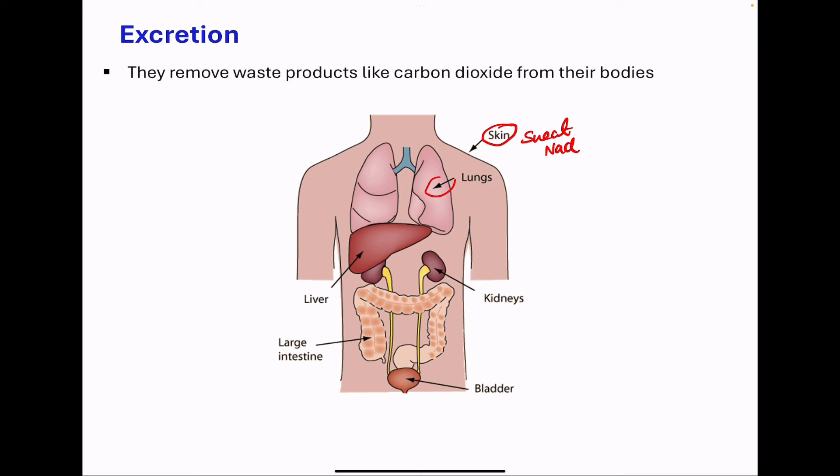It's going to occur through the gaseous exchange system, where carbon dioxide is taken out of the body, and it could occur through the kidneys, where urea is passed out, as well as some excess salts that are not necessary in the body. So these are the major excretory organs: the kidneys, the lungs, and the skin.